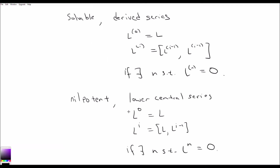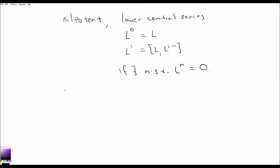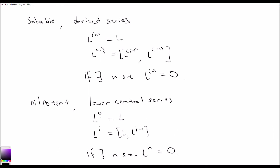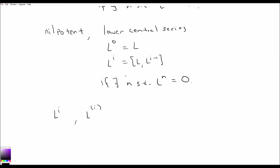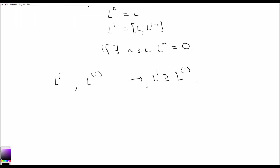They're pretty closely related, and in fact nilpotency implies solvability. The way to see that is by considering L to the i and L to the (i) — the derived series terms. Every time we take a term in the derived series, we bracket with potentially fewer vectors than we would in the lower central series, because in the lower central series we bracket with L each time rather than an ideal of L. What ends up happening is that L to the i is a superset of L to the (i).